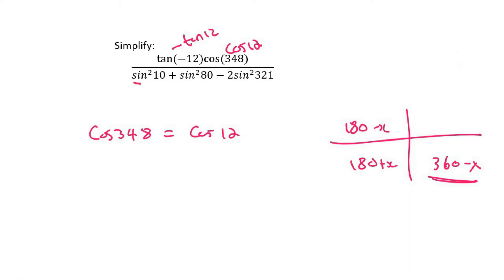This sin squared 10, we're not going to touch that because it's already less than 90. And sin squared of 80, we're also going to leave that alone because it's already less than 90. But this part here we can fix, so that's going to be sin squared of 321. So we just put the square on the outside for now.